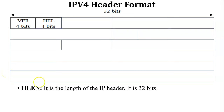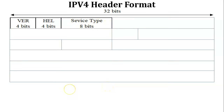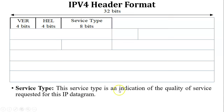The next field is IHL, which stands for Header Length. IHL contains four bits of data and stores the length of the header in 32-bit words. The next field is Service Type, which contains 8 bits of data. There are different types of quality of service provided to the IP datagram, such as less delay, high throughput, and reliability of the packet.